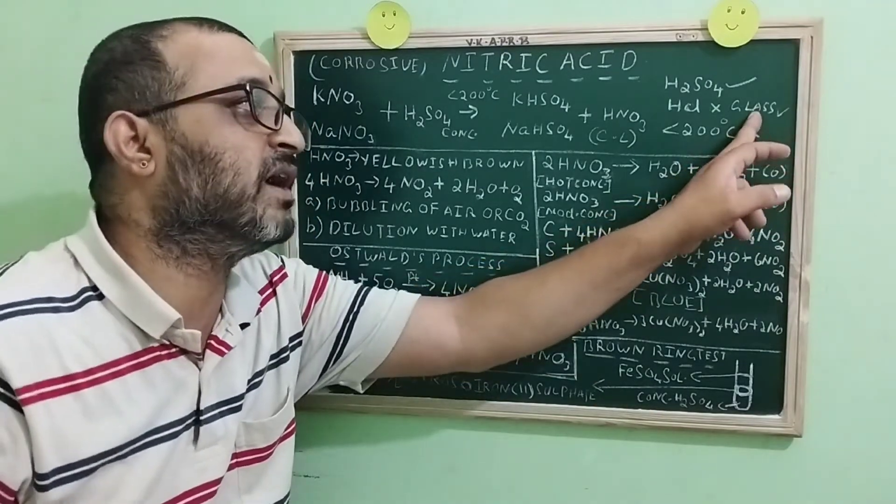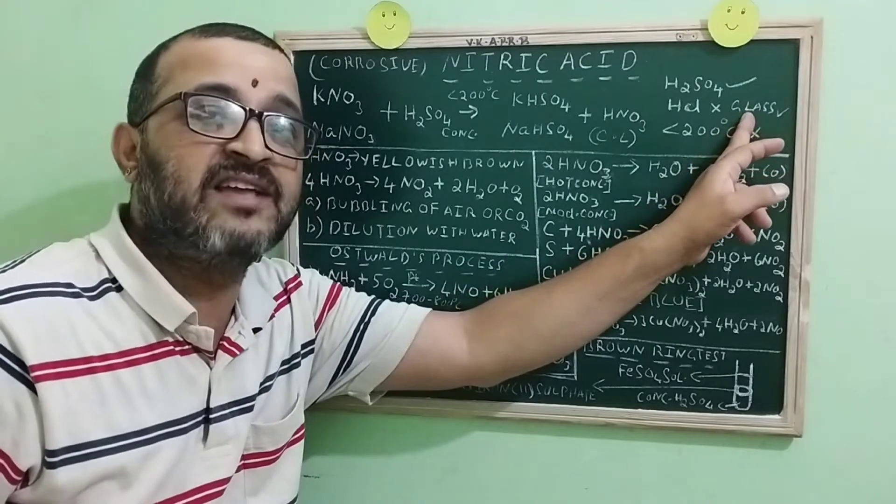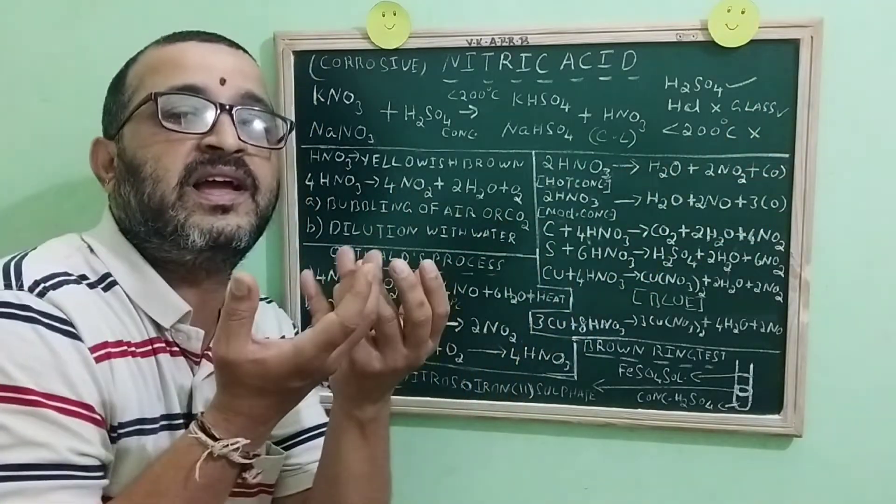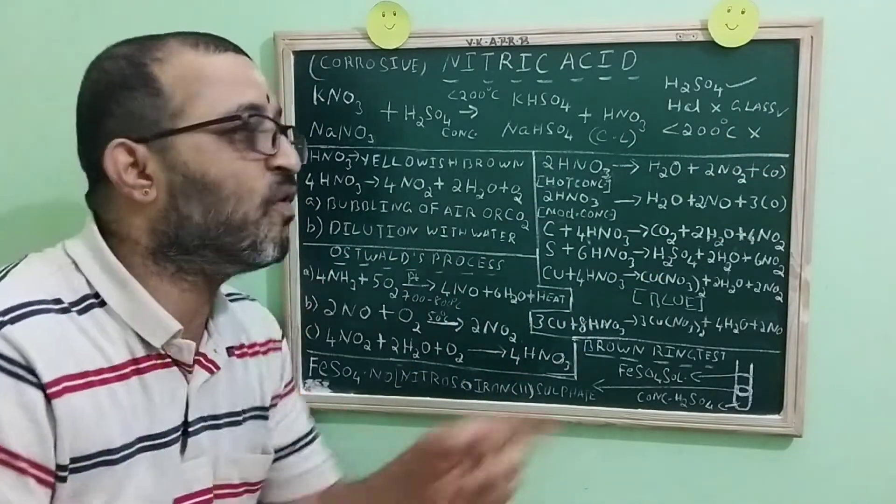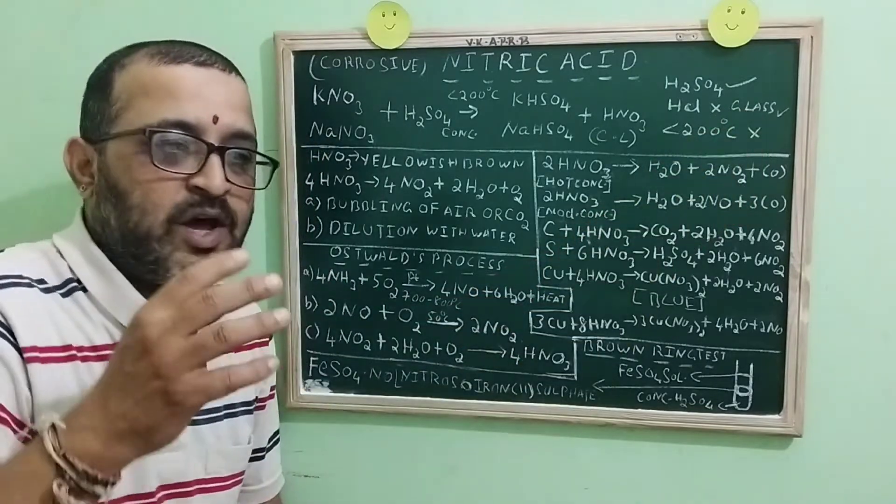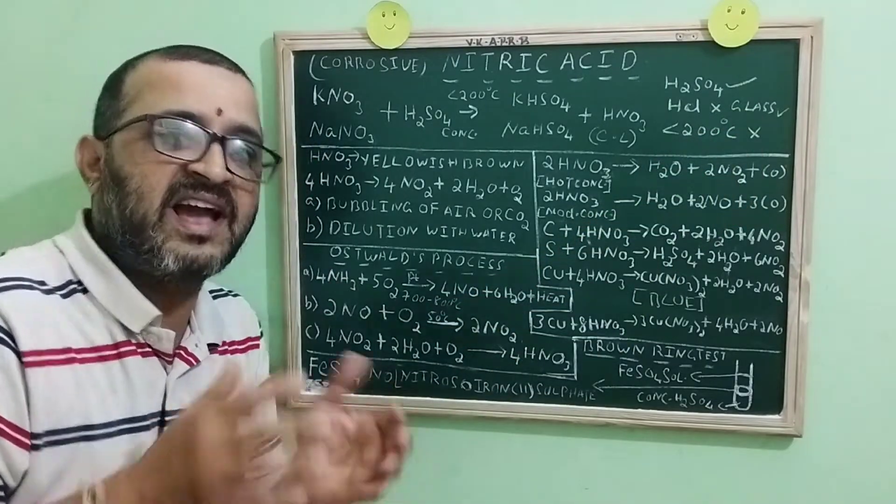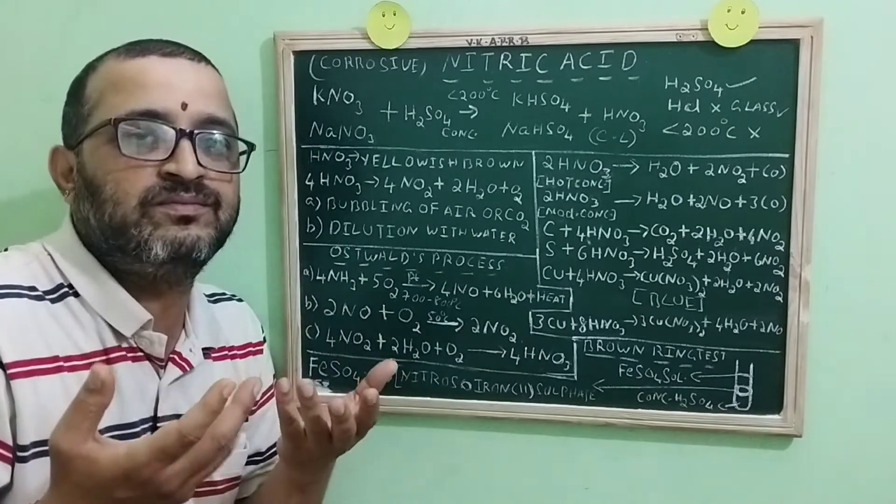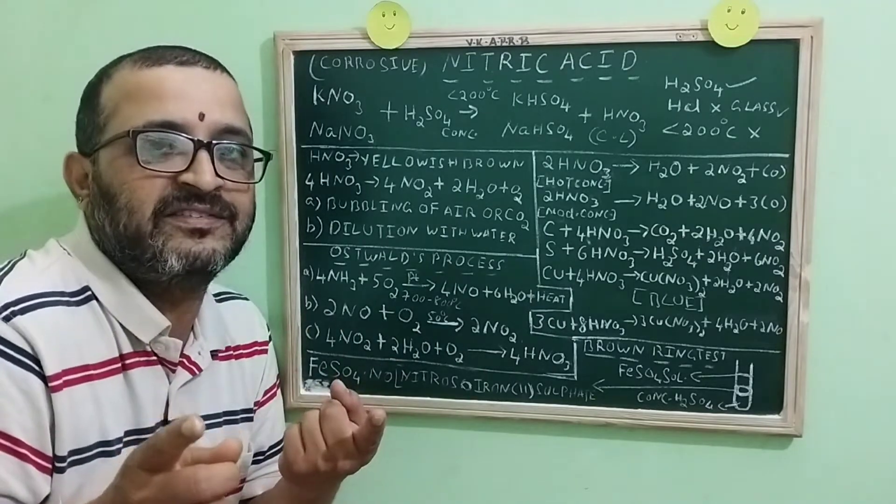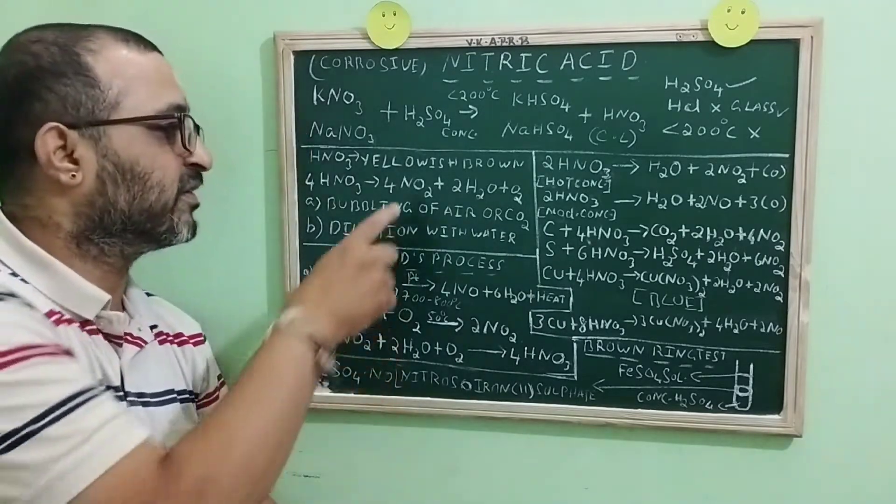As usual, I already told that nitric acid is corrosive. That's why all the apparatus are made up of glass. Now, I want to manufacture nitric acid in large scale. What will I do? Obviously, I have to go for Oswald's process.